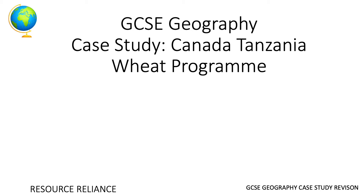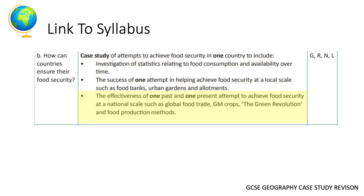Welcome back to another GCC geography revision video. This case study is the Canada-Tanzania wheat program from resource reliance in Paper Two. It links to the syllabus where we look at Tanzania and lots of different case studies. The two key things here are: past attempt and food security, with the third key thing being national scale — so we're thinking about whether it helped the whole of Tanzania.